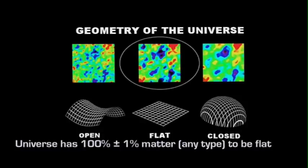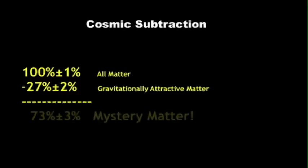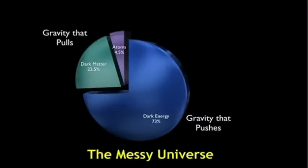Now, any type of matter contributes to this. And so, we do a little bit of cosmic subtraction, we find that 100% of everything contains in that geometrical information. 27% of the universe is the stuff that's attractive, leaving us with 73% mystery matter, the same stuff that appears to be pushing the universe apart. So, where does this leave us? It leaves us with a bit of a mess, where 4.5% of the universe is stuff we can see, and the rest is this dark matter, which pulls, and dark energy, which pushes.